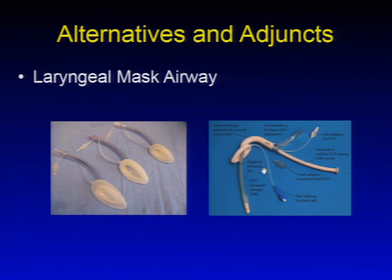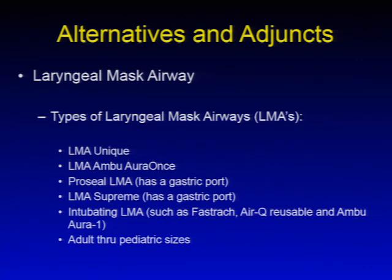Alternatives and adjuncts: laryngeal mask airway. Types of LMAs include the LMA Unique, LMA Ambu Aura Once, ProSeal LMA — which has a gastric port — LMA Supreme — which also has a gastric port — intubating LMAs such as the fast-track, AirQ Reusable, and Ambu Aura-i. There are different sizes: adult sizes 3, 4, and 5; pediatric sizes 0, 1, and 2.